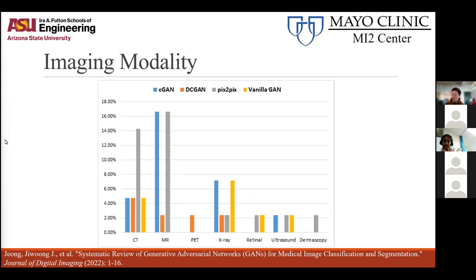By modality, no surprise — CT and MRI are the highest utilized because they represent the largest datasets we can get. X-rays are very common as well because there are a lot of chest X-rays to work from. PET images, retinal images, ultrasound, and dermoscopy are growing, with more papers coming out. This data was from up to late 2022.